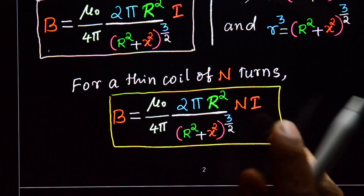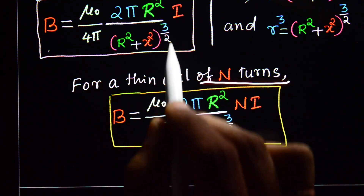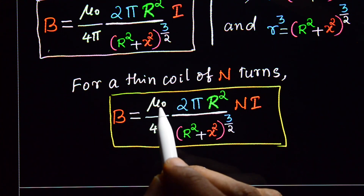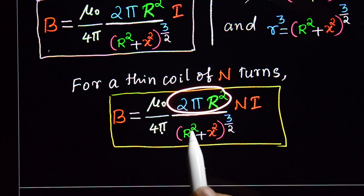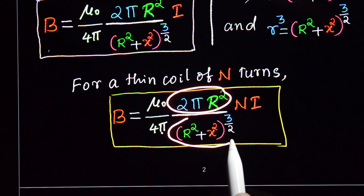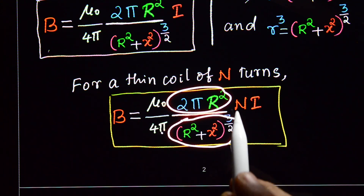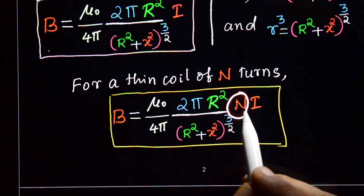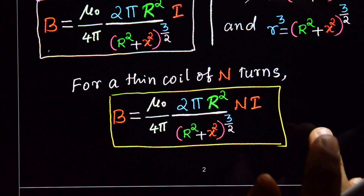Substituting, the required expression is B = (μ₀/4π) × (2πR²) / (R² + X²)^(3/2) × I. If the loop consists of N number of turns, then B = (μ₀/4π) × (2πR²) / (R² + X²)^(3/2) × N × I.